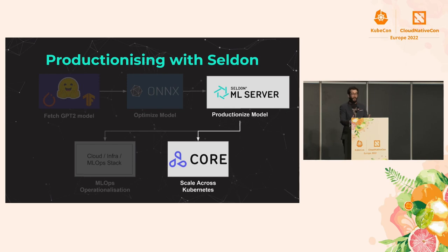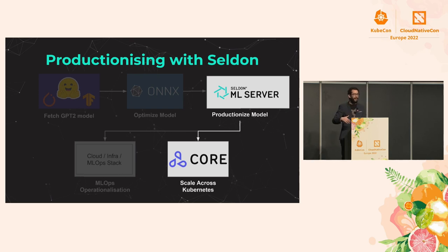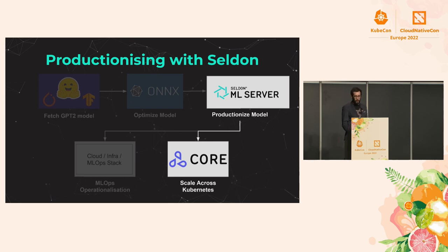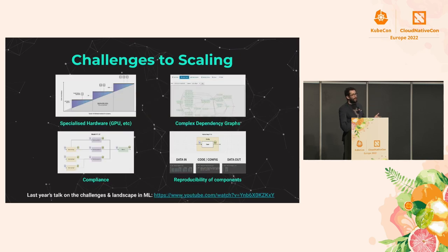Now that we have an artifact and saw how to run it in Python, the question is how do we actually deploy it? Before putting it in our Kubernetes cluster — to avoid bothering the DevOps team — we want to first make sure it works locally and performs to what we expect. For this, we're going to use two tools called ML Server and Seldon Core, because there are many challenges when scaling machine learning that go well beyond normal software: specialized hardware like GPUs or TPUs, complex dependency graphs across potential inference pipelines.